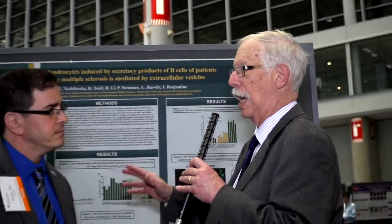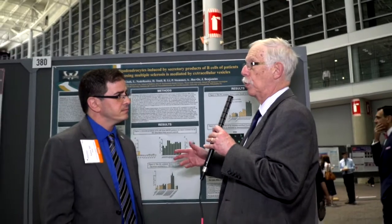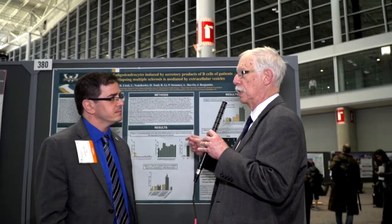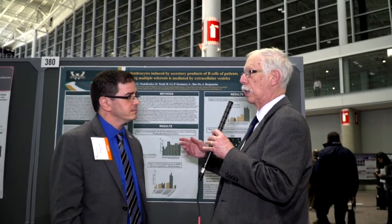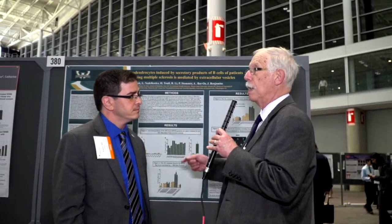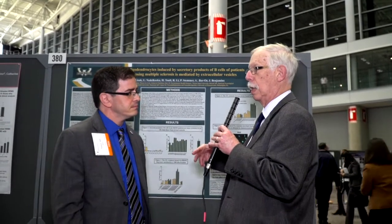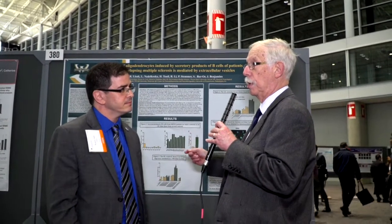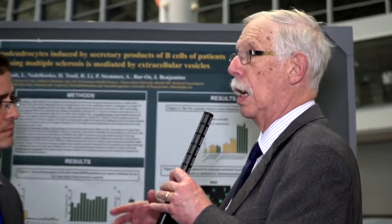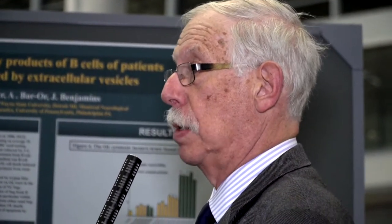That last part is speculation, but we think it's important. Our big emphasis now is to try to characterize whether these are definitely exosomes or some other microvesicle, because how you would interfere with it would be different for different types. Then we need to determine whether it's a quantitative or qualitative difference between MS and controls, because we know that cortical disease is a better correlate with progression and permanent disability than is the demyelination.